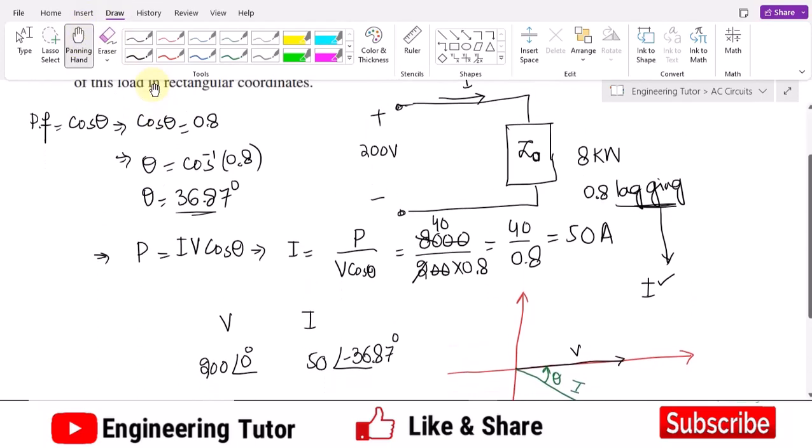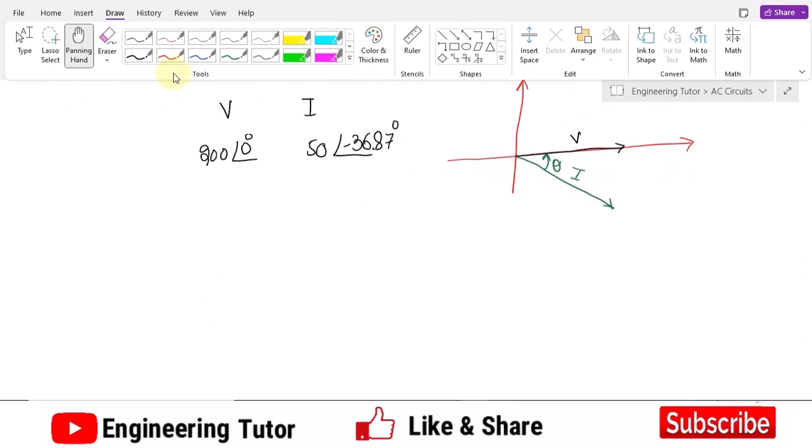So that is now a very simple circuit where I know the current, I know the voltage, and I want to find out this Z naught. The validity of Ohm's law applies here. According to Ohm's law, V equals I Z naught.